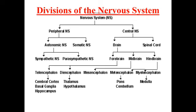Divisions of the Nervous System: the nervous system consists of the peripheral nervous system and the central nervous system. The peripheral nervous system is divided into the autonomic nervous system and the somatic nervous system. The autonomic nervous system is further divided into the sympathetic and parasympathetic nervous systems. The somatic nervous system is associated with the voluntary control of body movements via skeletal muscles.